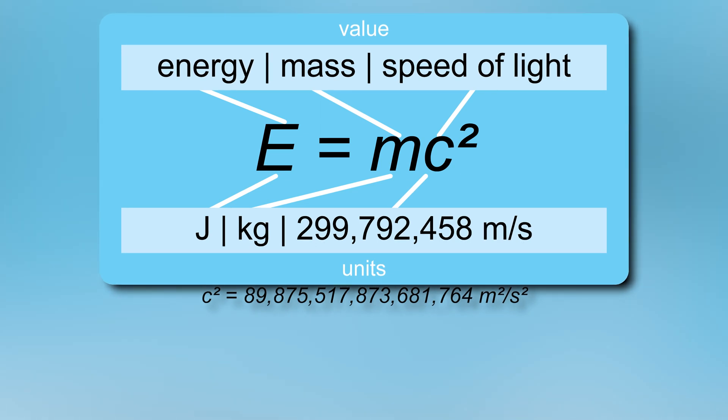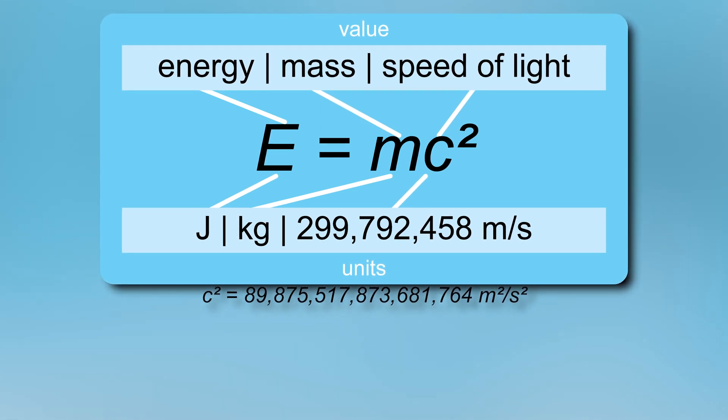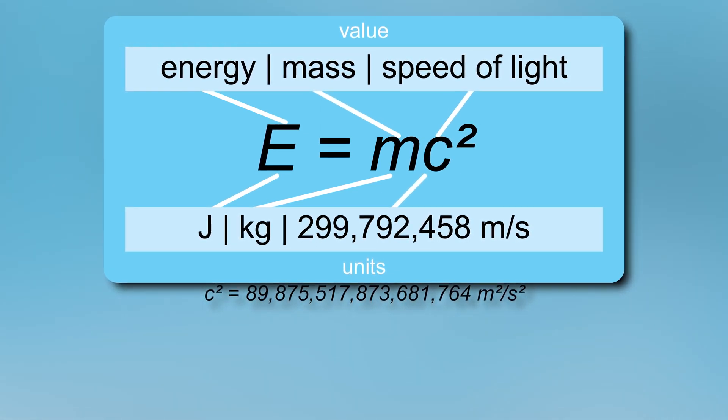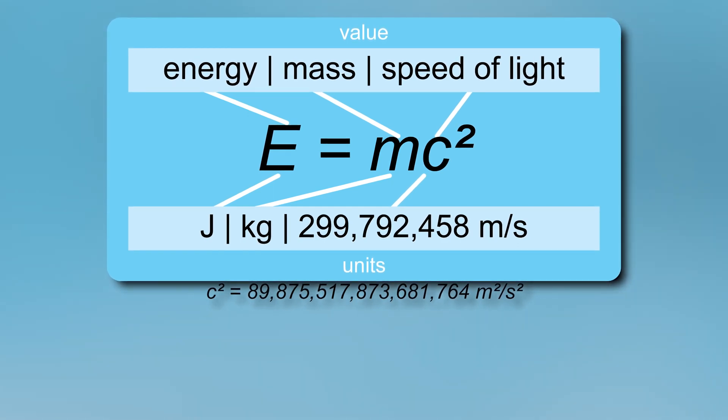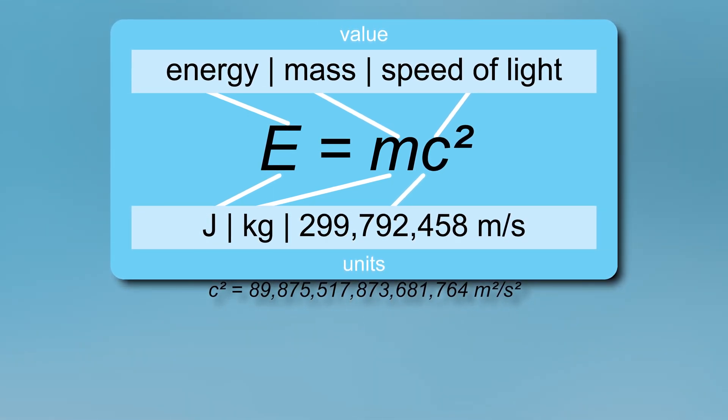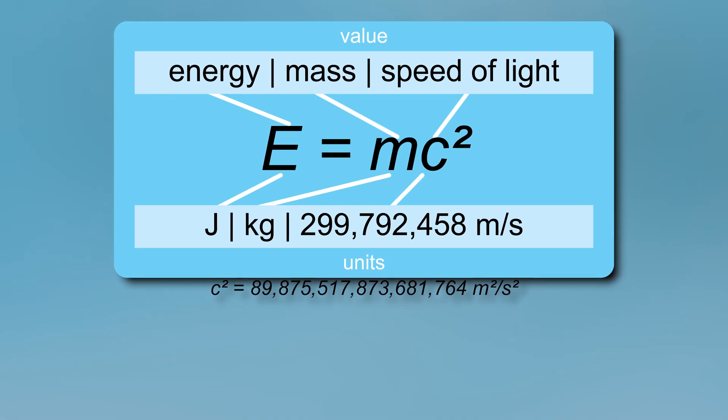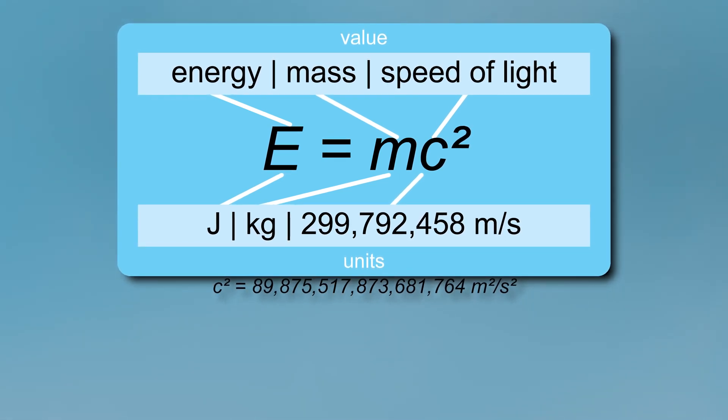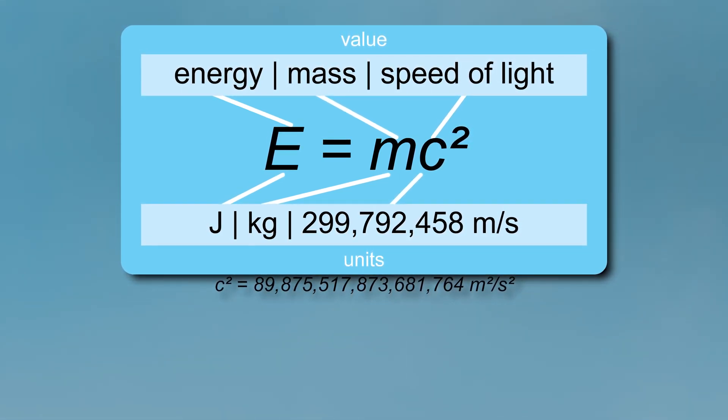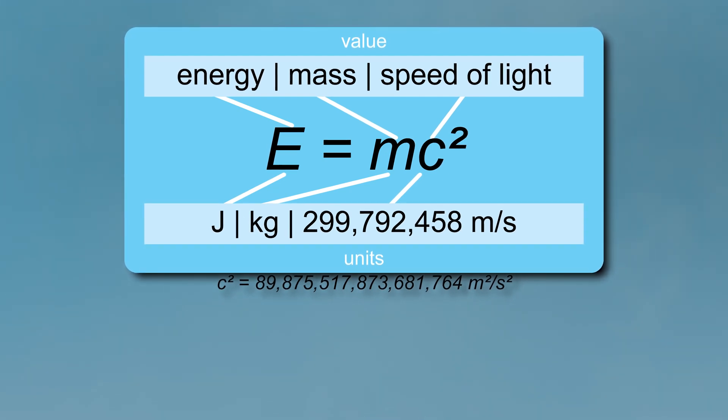The equation suggests that a little quantity of rest mass, measured while the system is at rest, equates to a vast amount of energy which is independent of the composition of the matter, because the speed of light is a big number in conventional units, about 300,000 km per second or 156,000 miles per second.